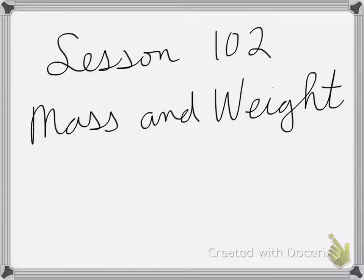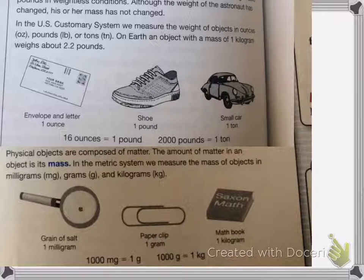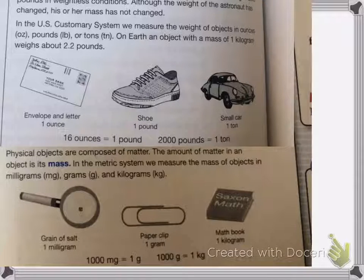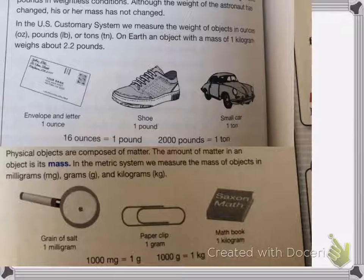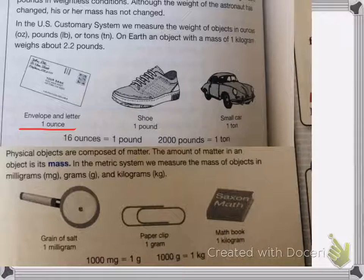All right, so lesson 102 is on mass and weight. So here we have the U.S. customary system for weight and then the units of measure for mass. So as you can see, an envelope and a letter is about one ounce, a shoe is about one pound, and a small car is about one ton.